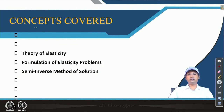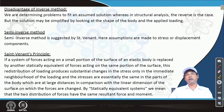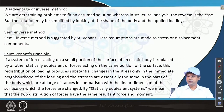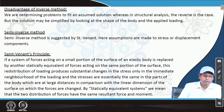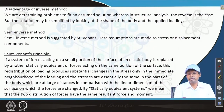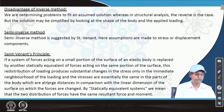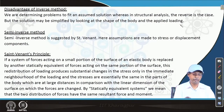It is almost similar — we will use some conclusions from the pure bending portion that we learned in the semi-inverse method. Before we go to the solution of the particular example, let us get introduced to the method. The disadvantage of the inverse method is that we are determining problems to fit an assumed solution, whereas in structural analysis the reverse is the case. But the solution may be simplified by looking at the shape of the boundary and the applied loading. The semi-inverse method, suggested by Saint-Venant, is popular in that sense — assumptions are made about stress or displacement components.